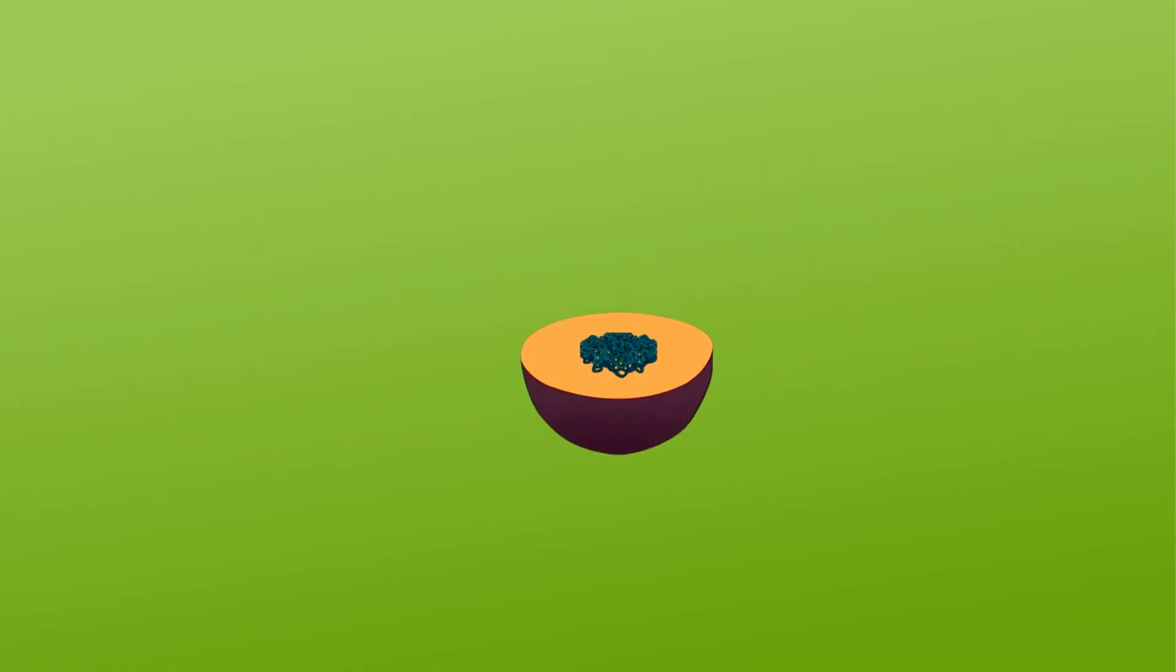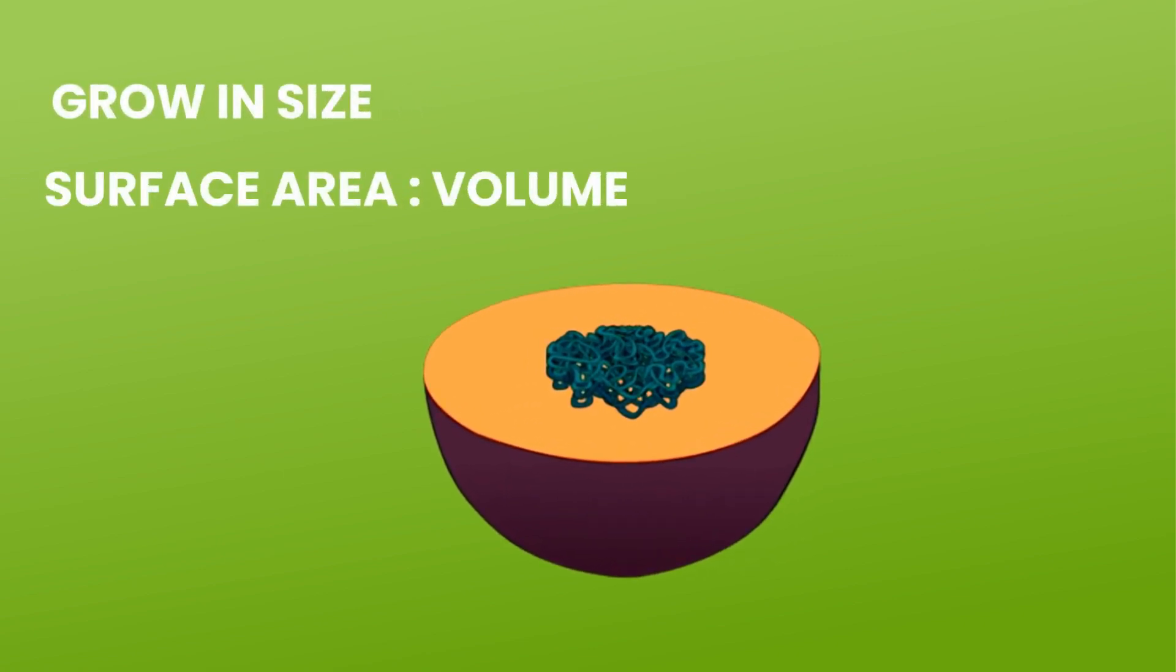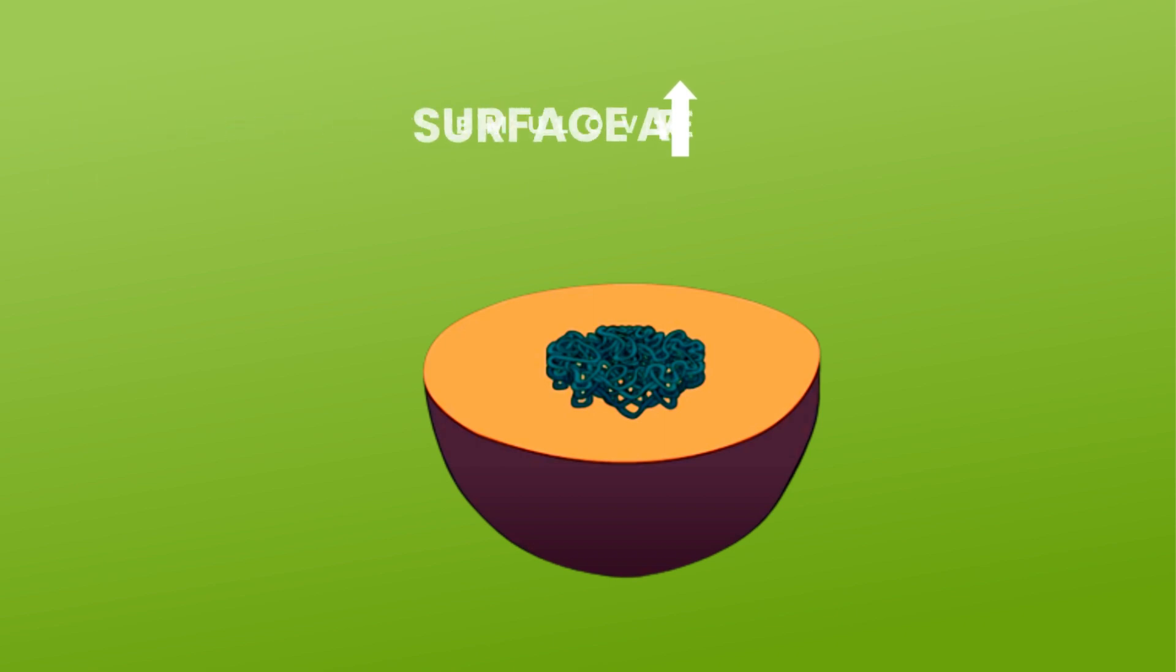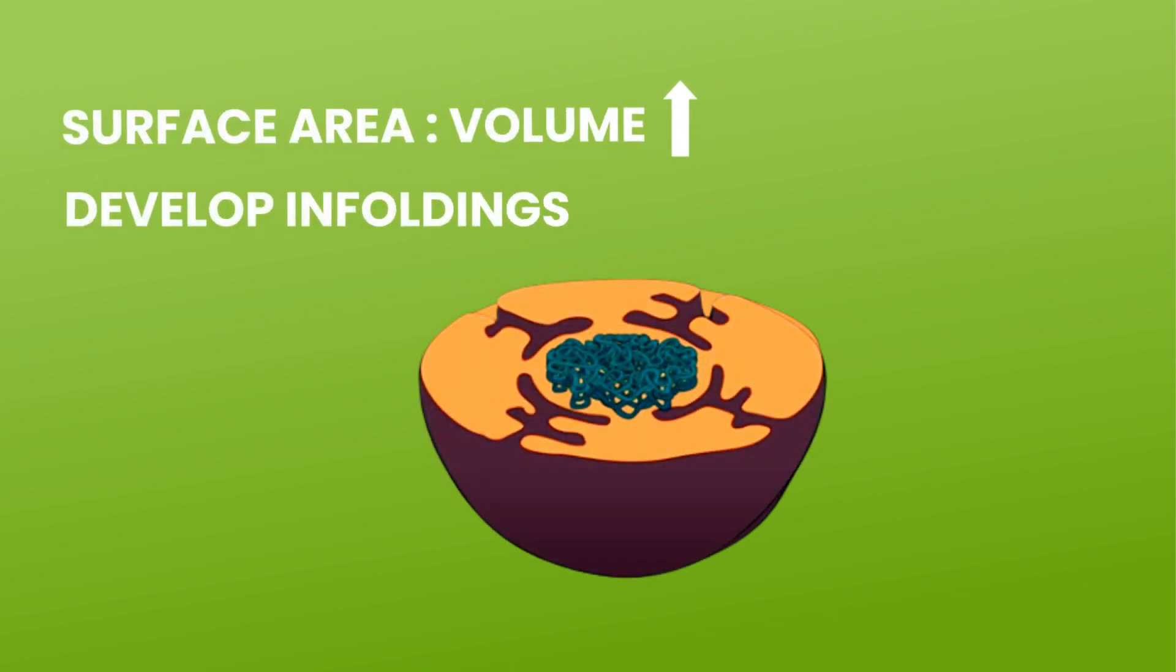A prokaryote grew in size, and as it did, its surface area to volume ratio decreased. So to increase the ratio, the cell developed enfoldings in its membrane.